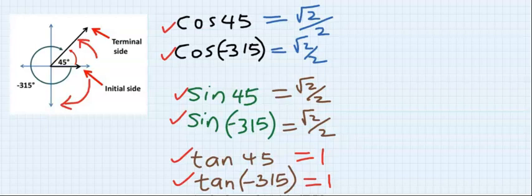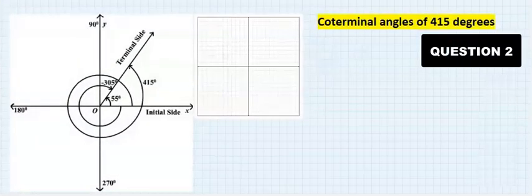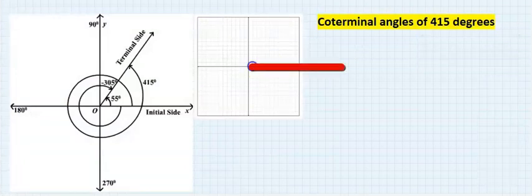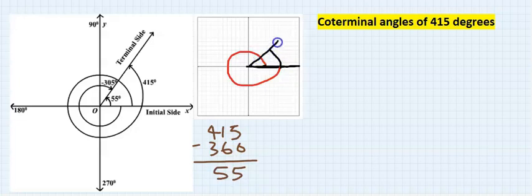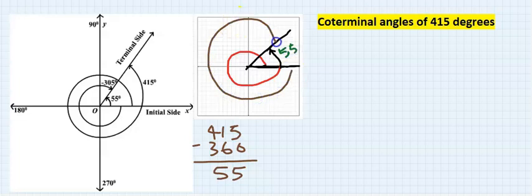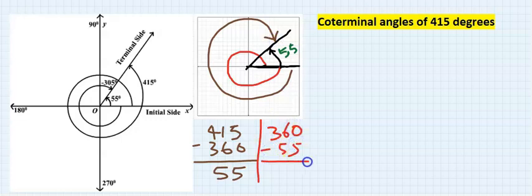Let's consider another example: find the coterminal angle of 415 degrees. We start from the reference line and go all the way 360. We calculate 415 minus 360, which gives 55, so we have 55 more to go. We can also go the other way round: 360 minus 55, which gives 305.